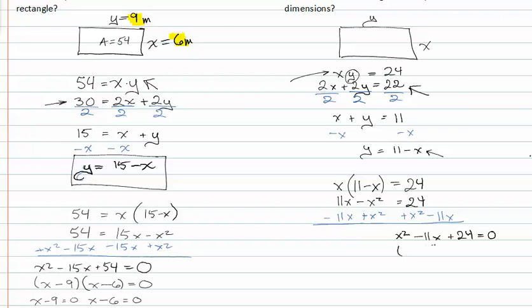And I get x squared minus eleven x plus twenty-four is equal to zero. Factoring, I get x minus eight x minus three equals zero. So setting my factors equal to zero, I get x is equal to eight and x is equal to three.